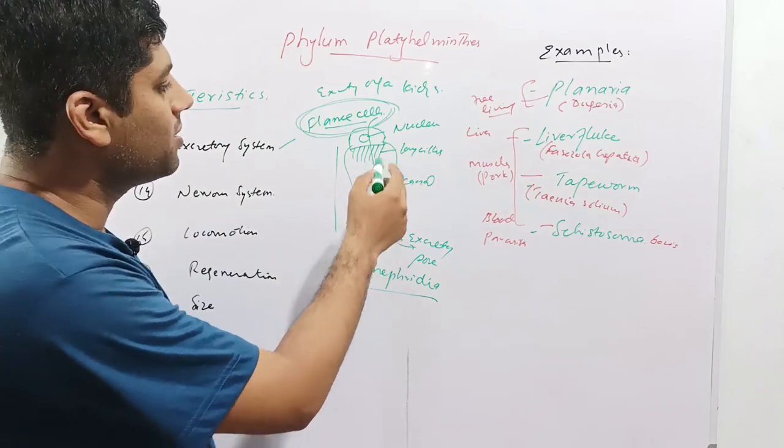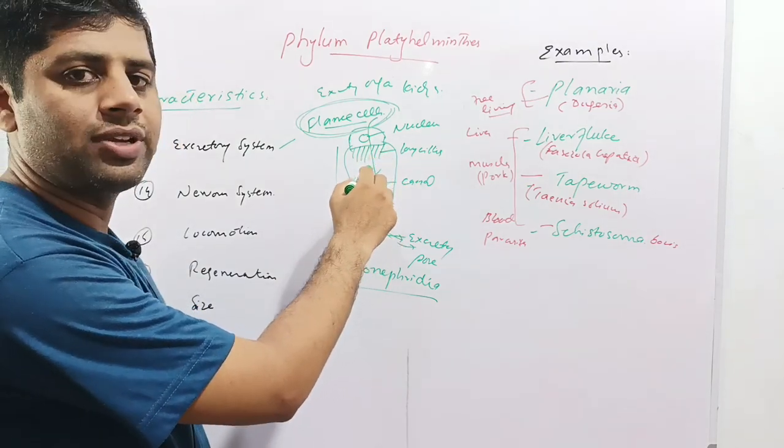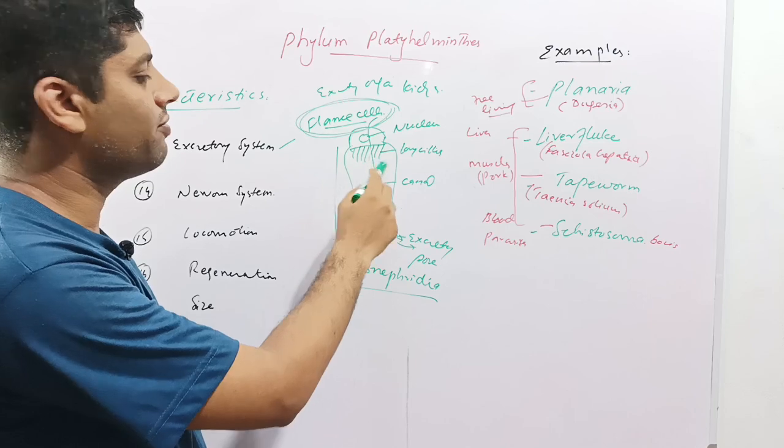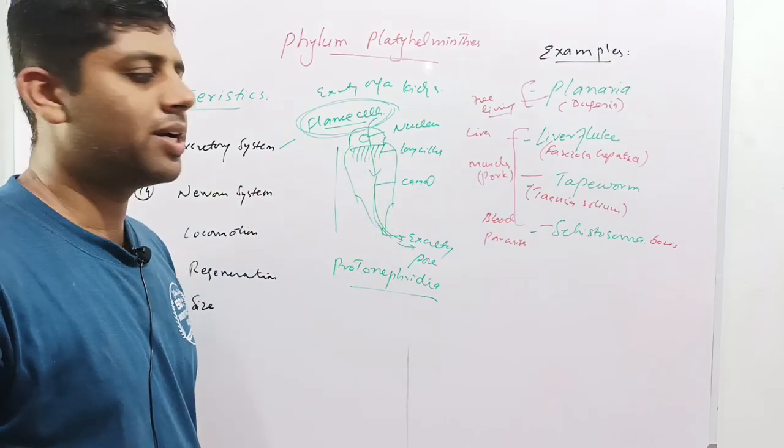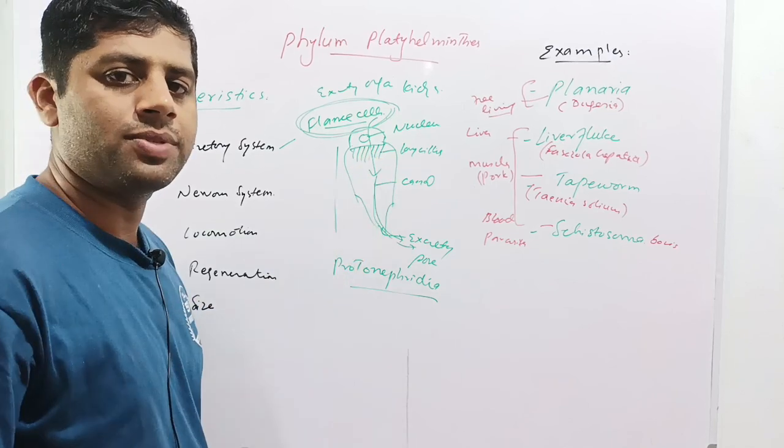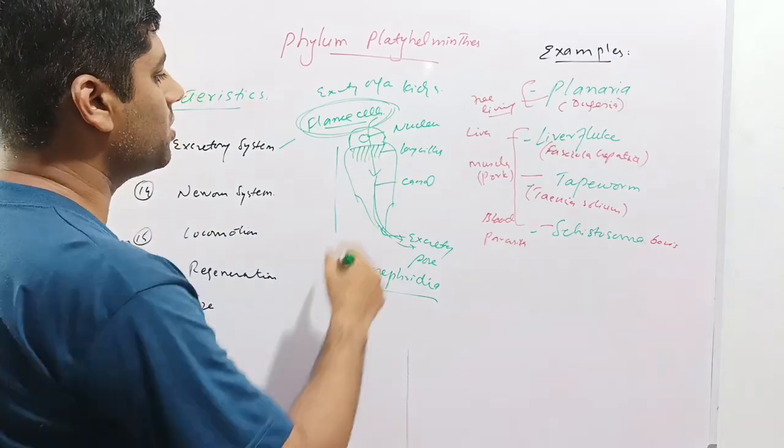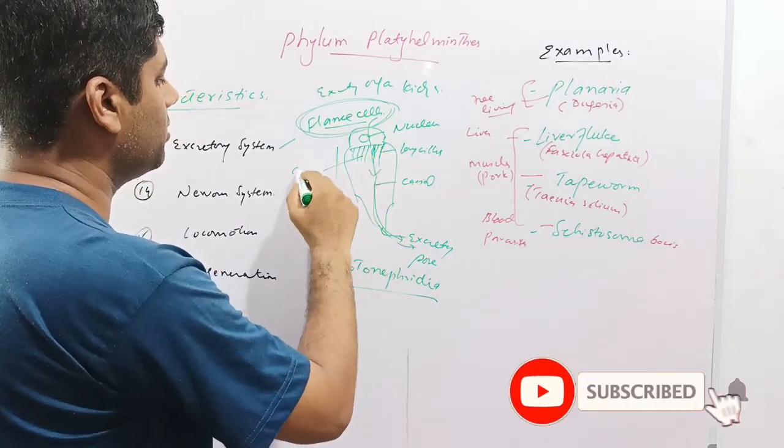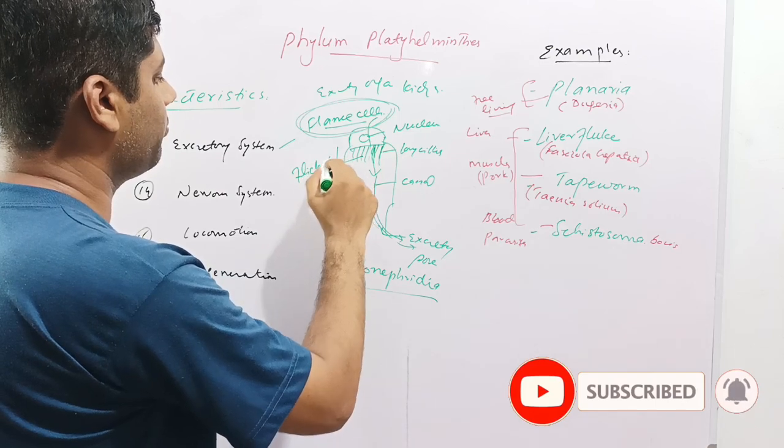This cell is called a flame cell because the long cilia flicker like the flame of candles. Therefore, these are termed flame cells. Otherwise, there is no technical reason behind this name. These cilia are flickering like candle flames.